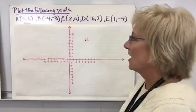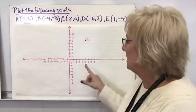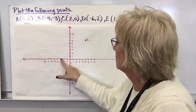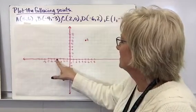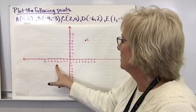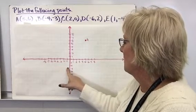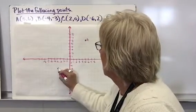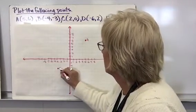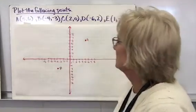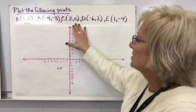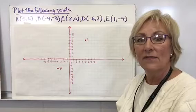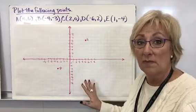Let's look at negative four and negative three — that's going to be my point B. I go to negative four on the x-axis and then drop down three units, which matches up with negative three on the y-axis. So point B is at (-4, -3). Why don't you try plotting C, D, and E, then come back and check your answers against mine.